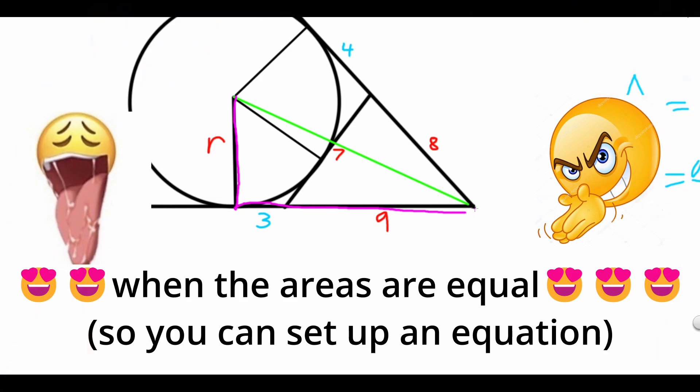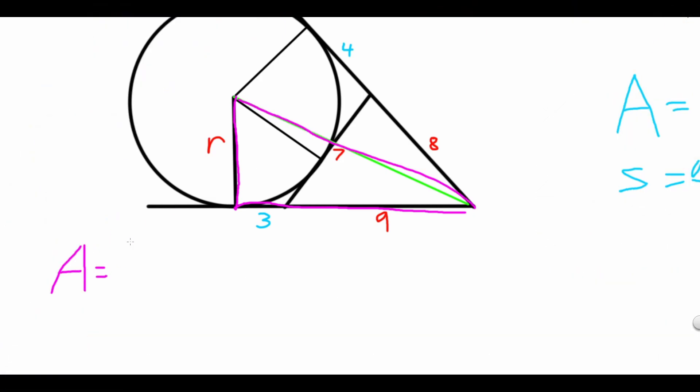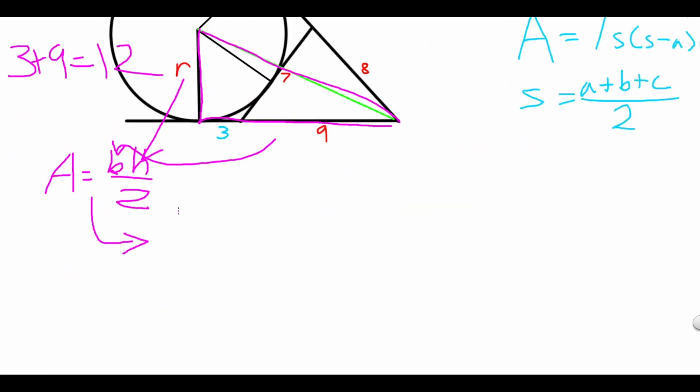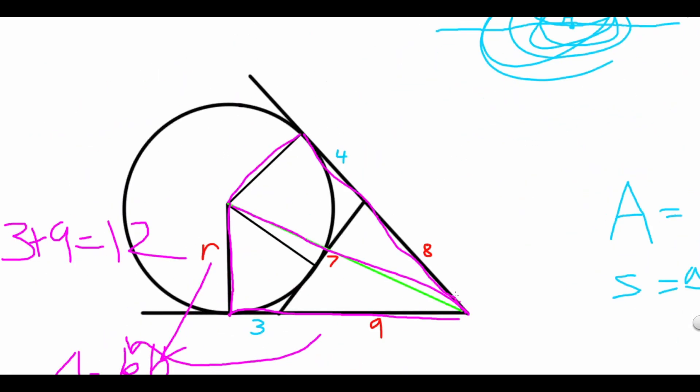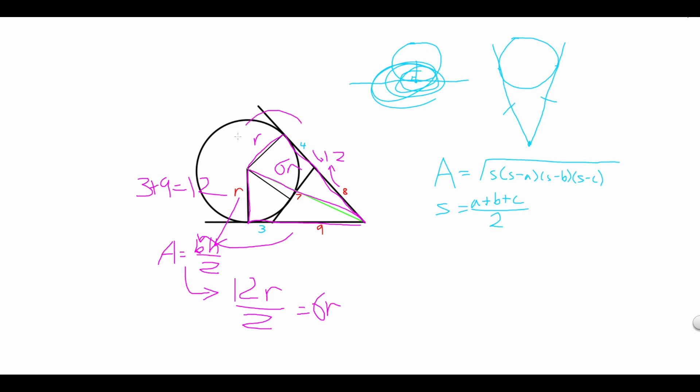Let's first start off with three triangles. We know that the area of a triangle is base times height divided by 2. In this case, the height is the radius. And the base is 3 plus 9 which is 12, meaning that the area is 12R divided by 2 which is 6R. Since the triangle on top is the same triangle, that is also 6R, meaning that the total area of this thing is 12R.